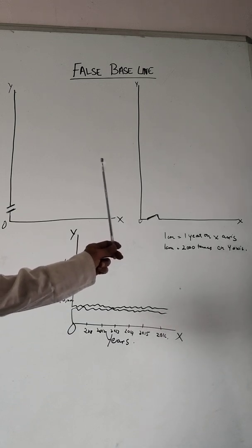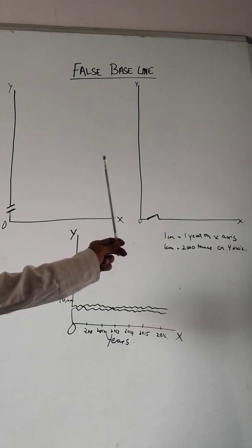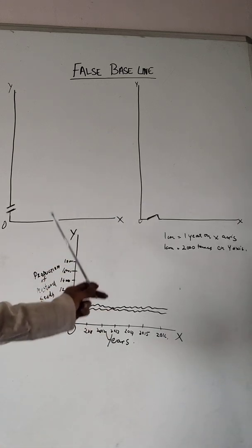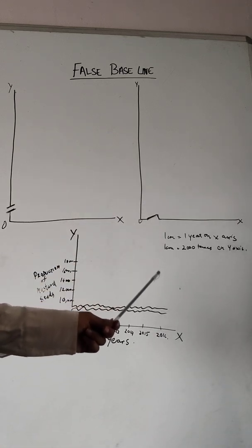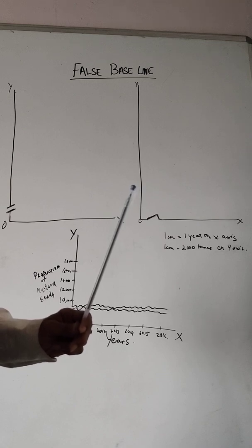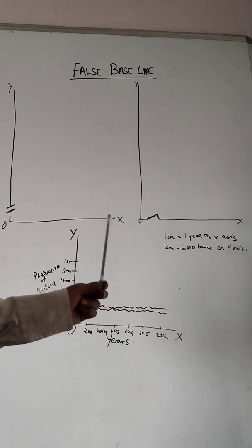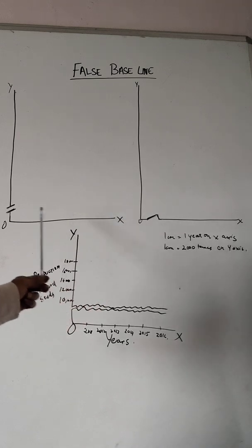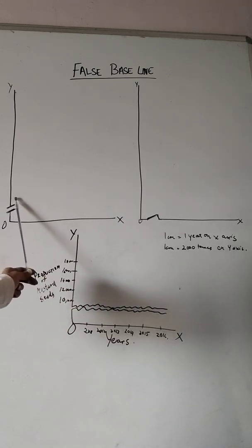If the values in the series are very large or the difference between the smallest value and zero is high, and if the values are to be indicated on the y-axis of the graph, then the y-axis is started somewhere above the zero point.